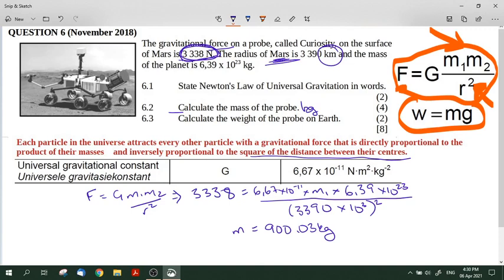Now, the mass of the particles on the Curiosity rover is going to be the same as the mass of the particles on Earth, unless we break it before we get back to Earth and lose some wheels or something. So the mass on Mars is the same as the mass on Earth. What is different on Earth is the acceleration due to gravity, because Earth has a different radius and a different mass.